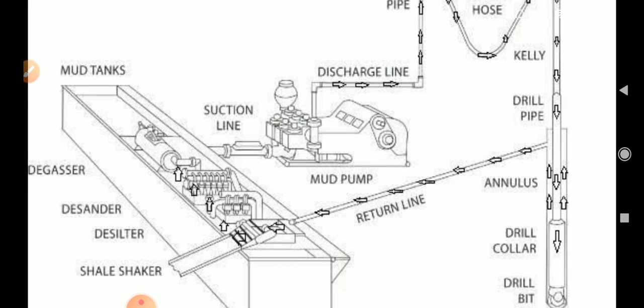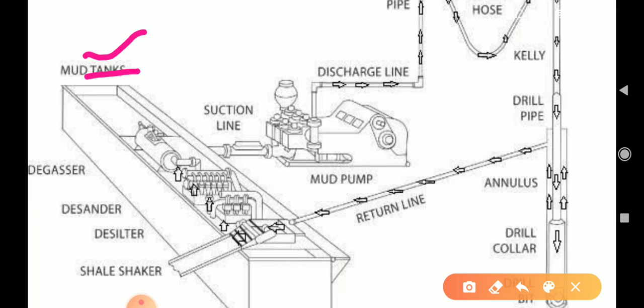There are different parts in the circulation system. The first important one is the mud tank. A mud tank is like a water tank, but it is specially designated for mud only. It may accommodate oil-based mud, water-based mud, or synthetic mud. Whatever type of mud is placed inside determines the name of the tank — for example, oil-based mud tank or water-based mud tank.